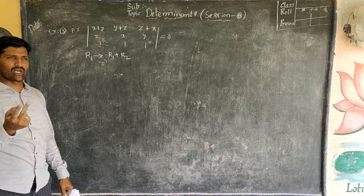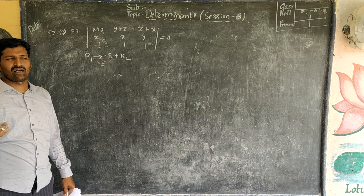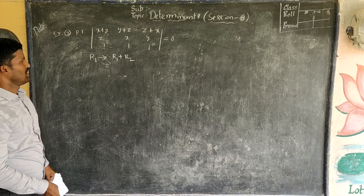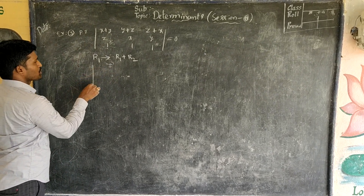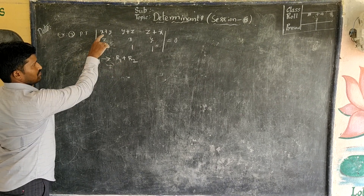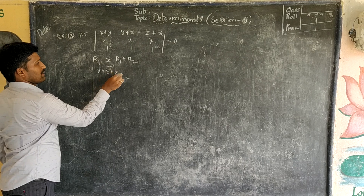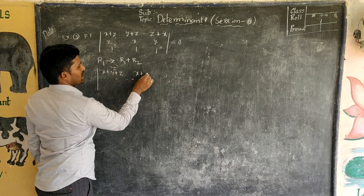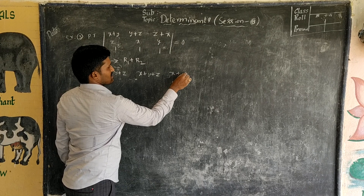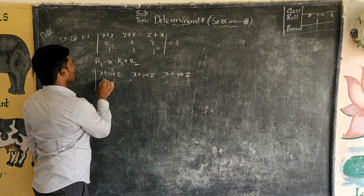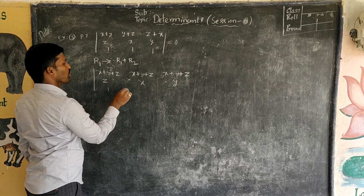To prove the determinant is 0, we have 2 conditions: either 2 rows are identical or 2 rows are proportional. Now using that, I am adding R1 and R2. Adding z value from R2 to R1, what will we get? x+y+z, x+y+z, x+y+z. The second and third rows have no changes: z, x, y and 1, 1, 1.